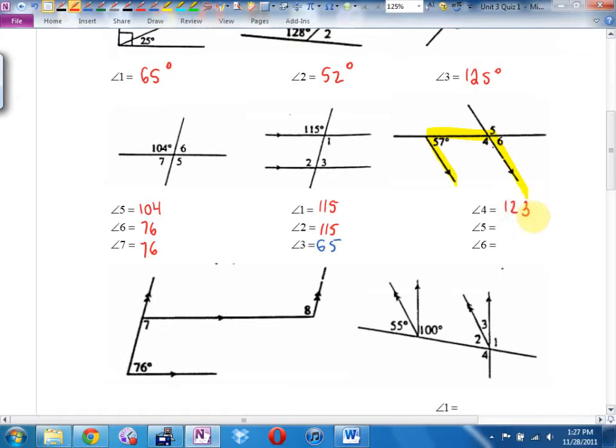123. Angle 5 is also 123, vertically opposite. Angle 6 is going to be 57 degrees, corresponding or supplementary.